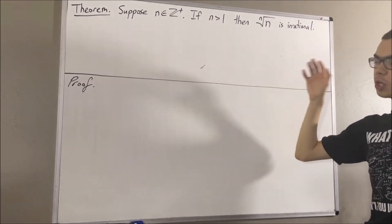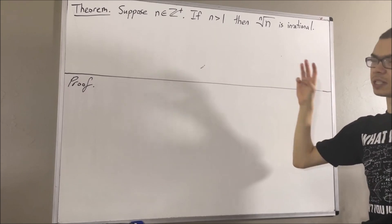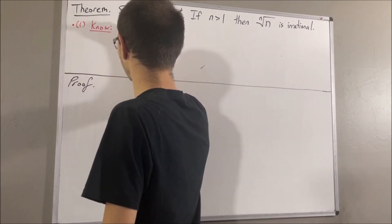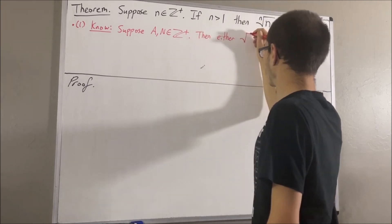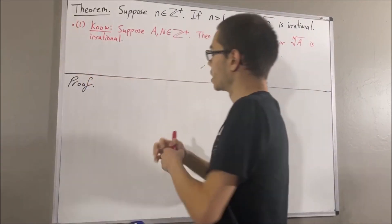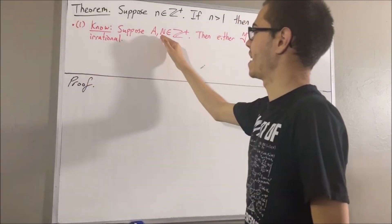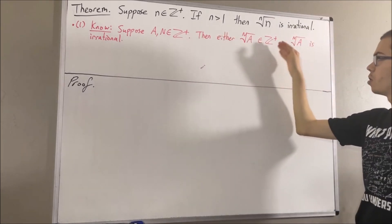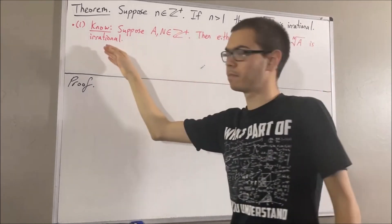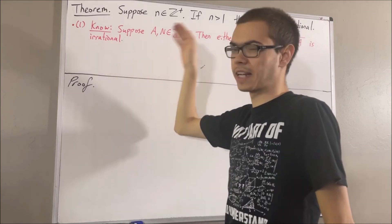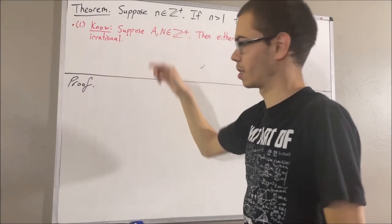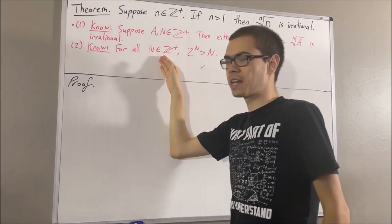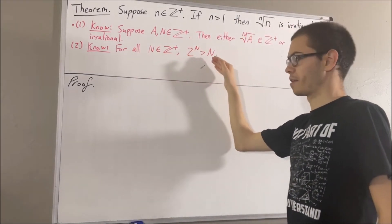Now, in proving this theorem, we are going to use three preliminary results. Here's the first one: suppose a and n are positive integers, then either the n-th root of a is a positive integer or the n-th root of a is irrational. Now here's the second preliminary result: for all positive integers n, 2 to the power of n is greater than n.